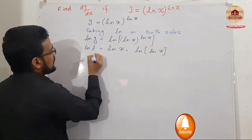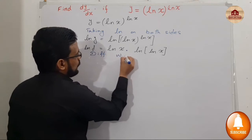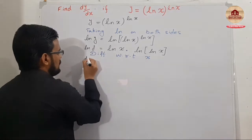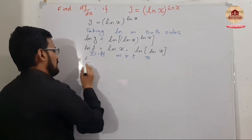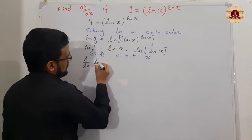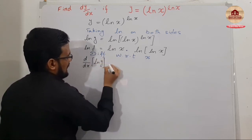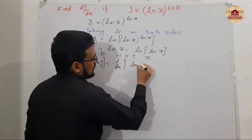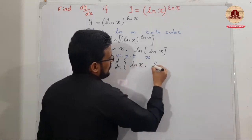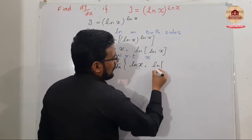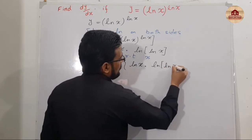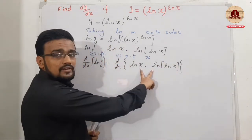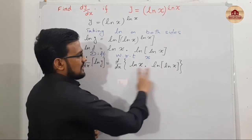Now differentiate with respect to x: d/dx of ln y equals d/dx of ln(x) times ln(ln(x)). Students, here you can see these are two functions, which means you can apply the product rule.